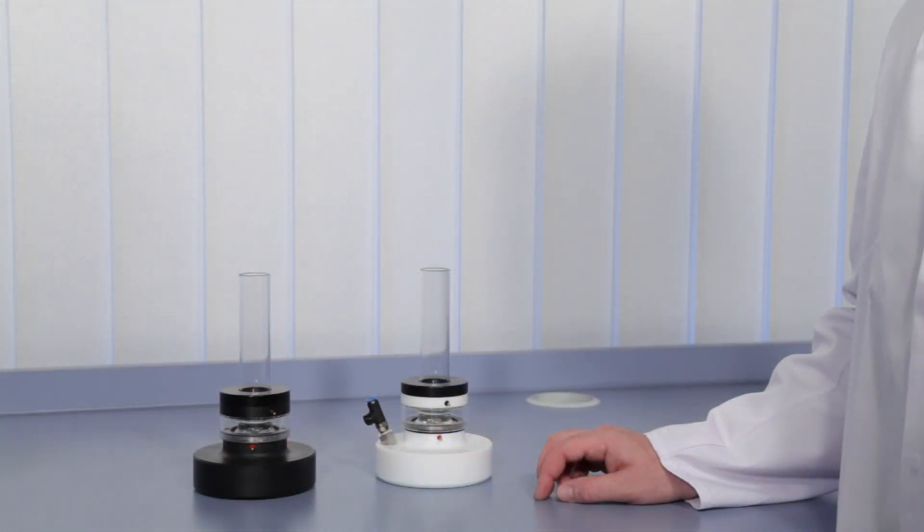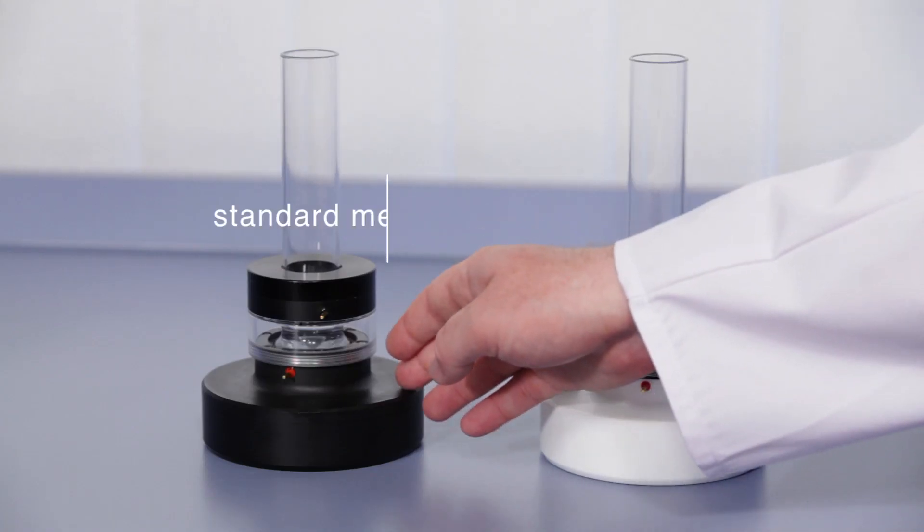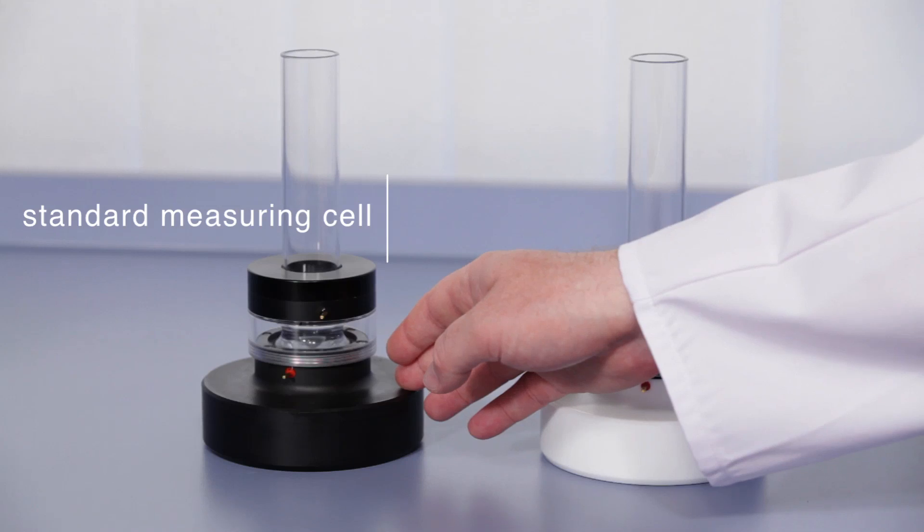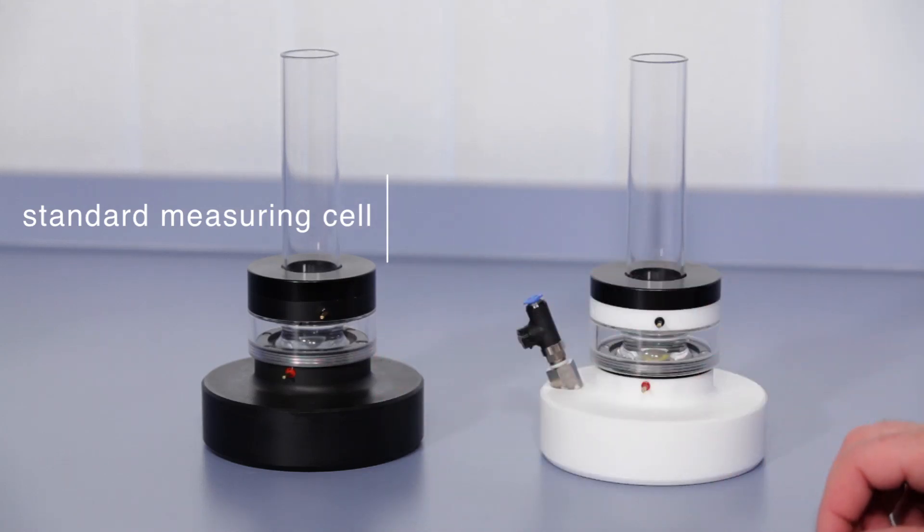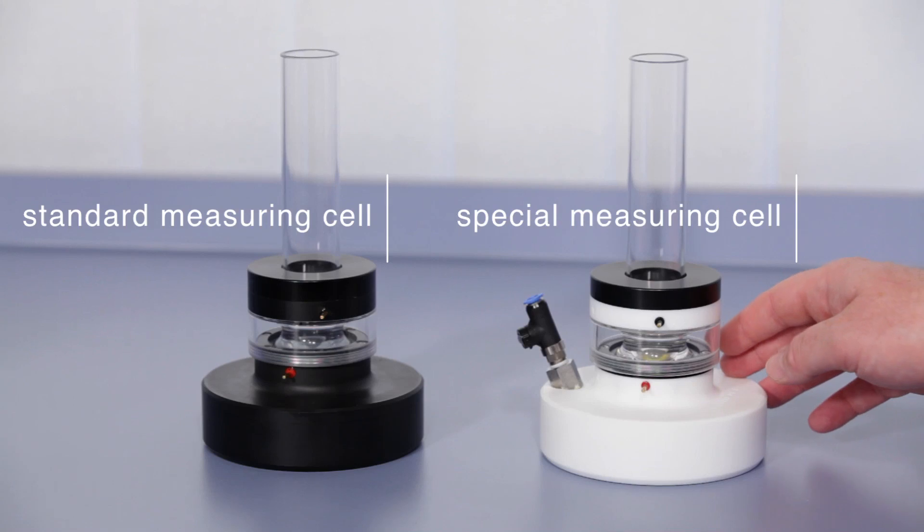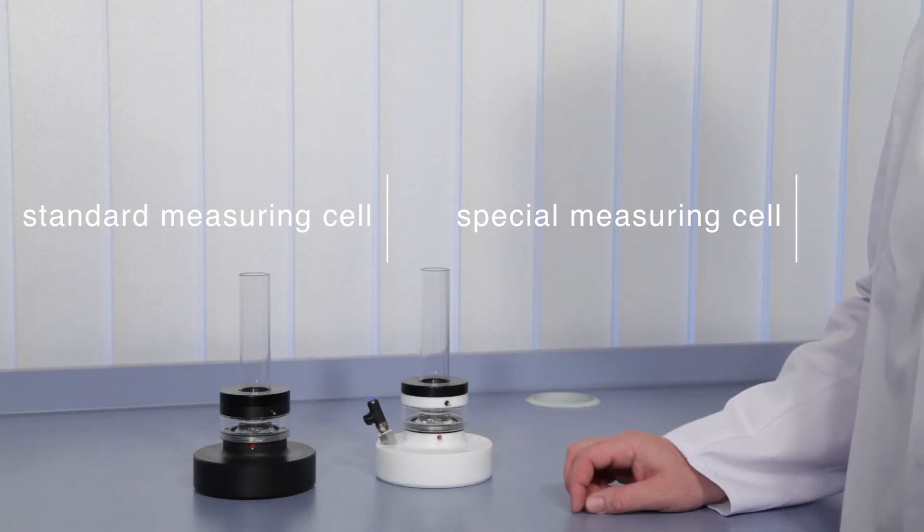The SZP has two different measuring cells. The black one, the standard cell, is used to measure fibrous suspensions. The white one, called special measuring cell, is optimized for measuring pigment slurries or other fine dispersed samples.